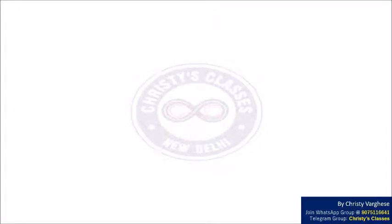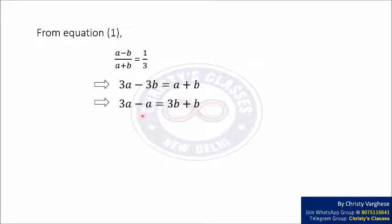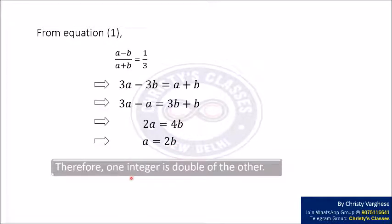So we got three equations and we are using equation 1 here. We have A minus B by A plus B equal to 1 by 3. On cross multiplying, this implies that 3A minus 3B equal to A plus B, which implies that 3A minus A equal to 3B plus B, which implies 2A equal to 4B, which implies A equal to 2B. This clearly says that one integer is the double of the other.